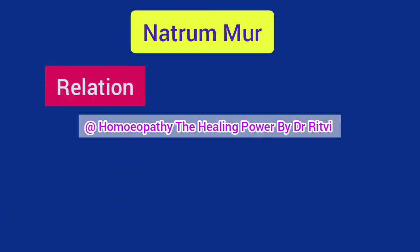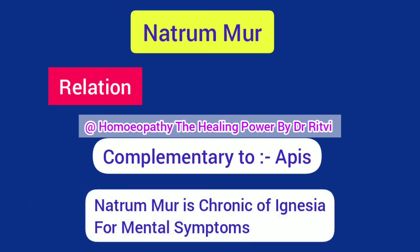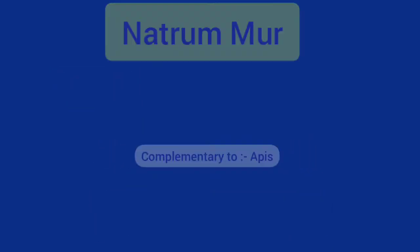Regarding relations with other medicines: Natrum Mur is complementary to Apis. Natrum Mur is a chronic of Ignatia, but only for mental symptoms. This concludes our detailed video on Natrum Mur. Please leave your valuable feedback and suggestions in the comments below, give this video a big thumbs up, share it with your friends, classmates and batchmates, and subscribe to the channel. Thank you for watching.